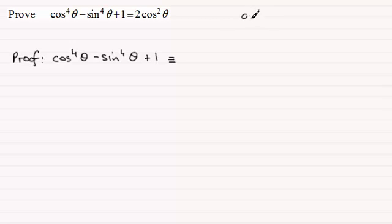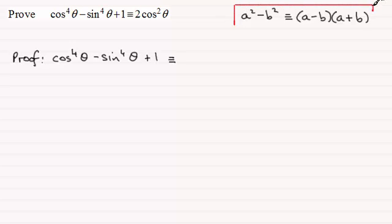Remember that a squared minus b squared is identical to (a minus b) multiplied with (a plus b). It occurs a lot in these kind of identities and we've got it again in this particular one here. We've got the difference of two squares across these two terms here.